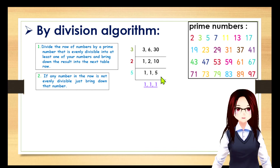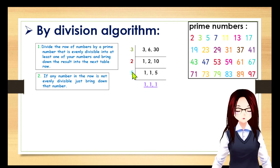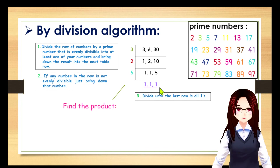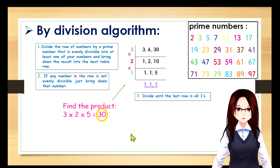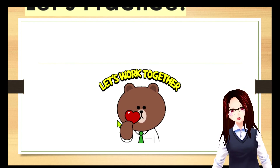Now divide again by the prime number 5: 1 divided by 5 — you can't, so bring down 1; 1 divided by 5 again — you can't, so bring down 1; and 5 divided by 5 equals 1. Now the last row is all 1s. Find the product: 3 × 2 × 5 = 30. This is your LCM.